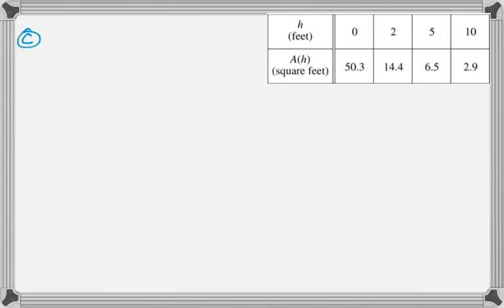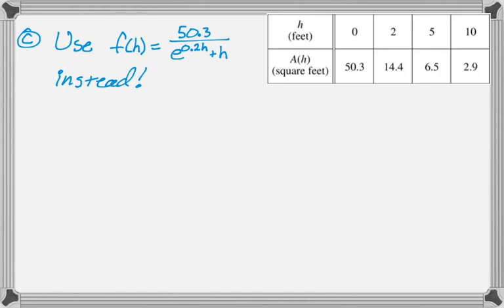So here's the table that we use for parts A and B. But in part C, they introduce a new function, which they call f of h, which is 50.3 over e to the 0.2h plus h. And we're told to basically use that for the area of a cross-section instead. And the question is, based on this model, what is the volume of the tank? And we have to indicate units of measure.